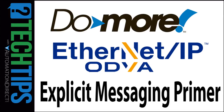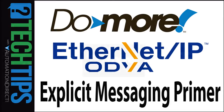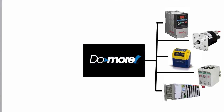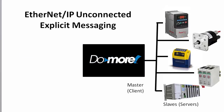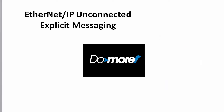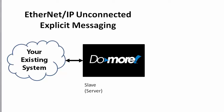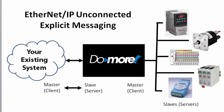The Do More PLC supports Ethernet IP Messaging, so it can configure and query any Ethernet IP device that supports the Ethernet IP Explicit Messaging protocol. It can also be set up as an Ethernet IP slave to your existing system, or it can do both at the same time.